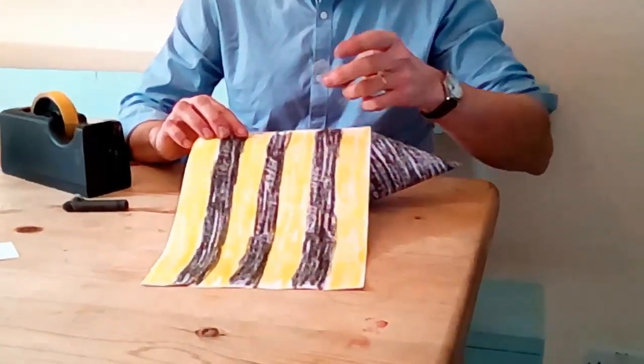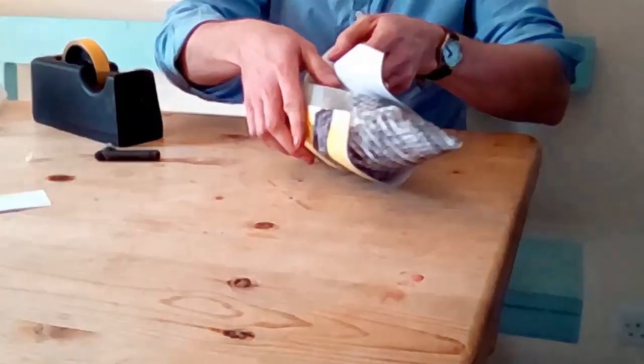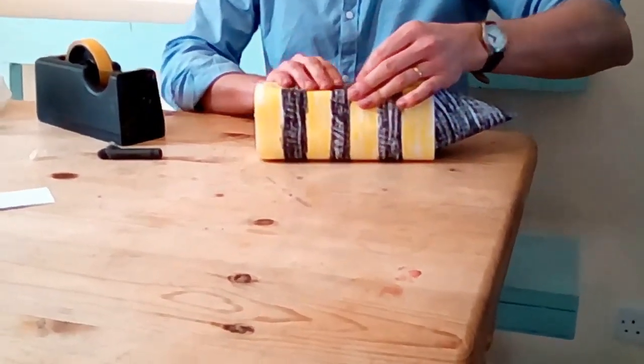Now wrap the stripy piece of paper around your milk bottle, like this, and tape it into position.